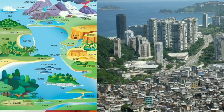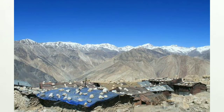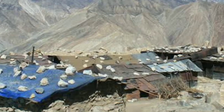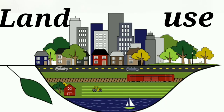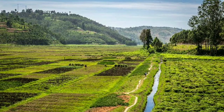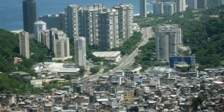Areas having suitable features attract more people and have higher population, while places without suitable climate or conditions have less population. Moving ahead, we will discuss about land use. Land use means the manner in which the land is used for various activities like agriculture, forestry, mining, and building houses or different types of settlements.